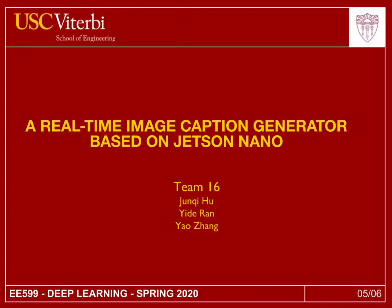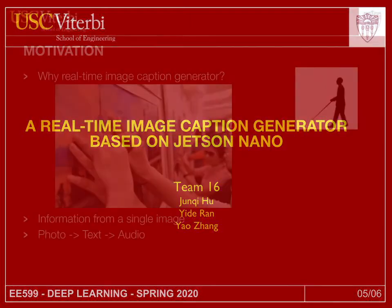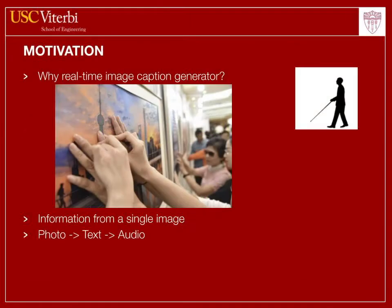Hi everyone, we are team 16 from EE599. Our final project is a real-time image caption generator based on Jetson Nano. Our goal is to build a real-time image caption generator that can find out the information in the image, generate the caption of it, and then convert the text to audio and feed it back to the user. In that way, we can use this deep learning technology to help people have more information about their environment.